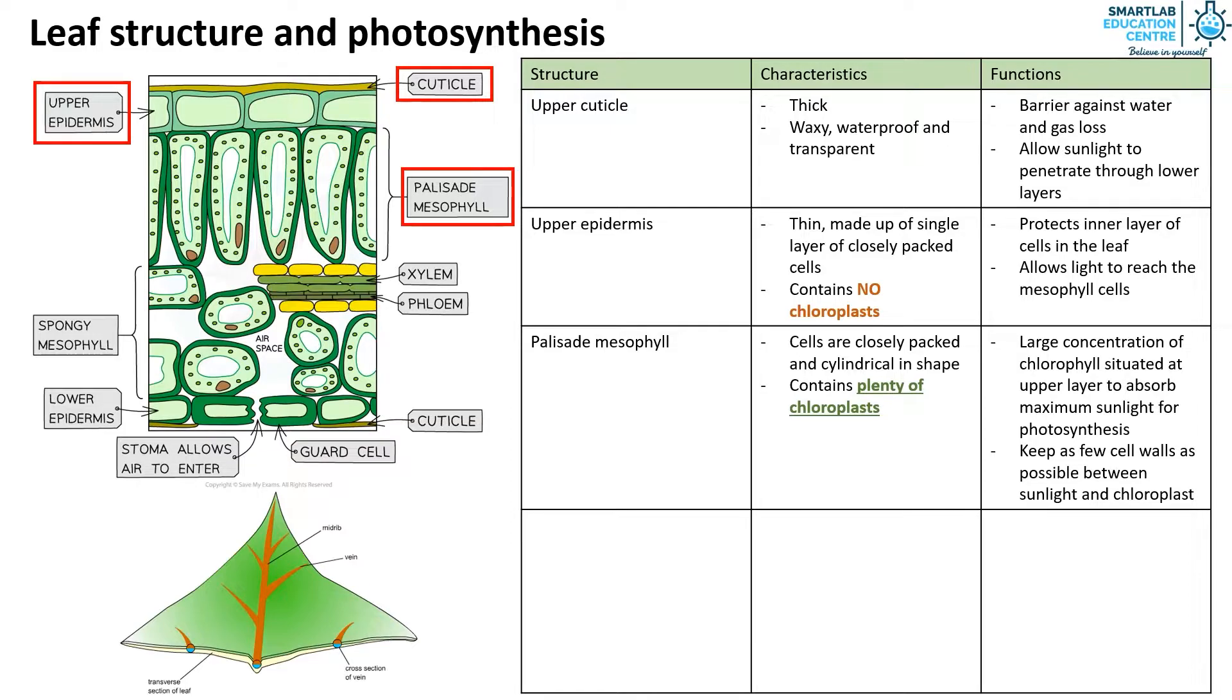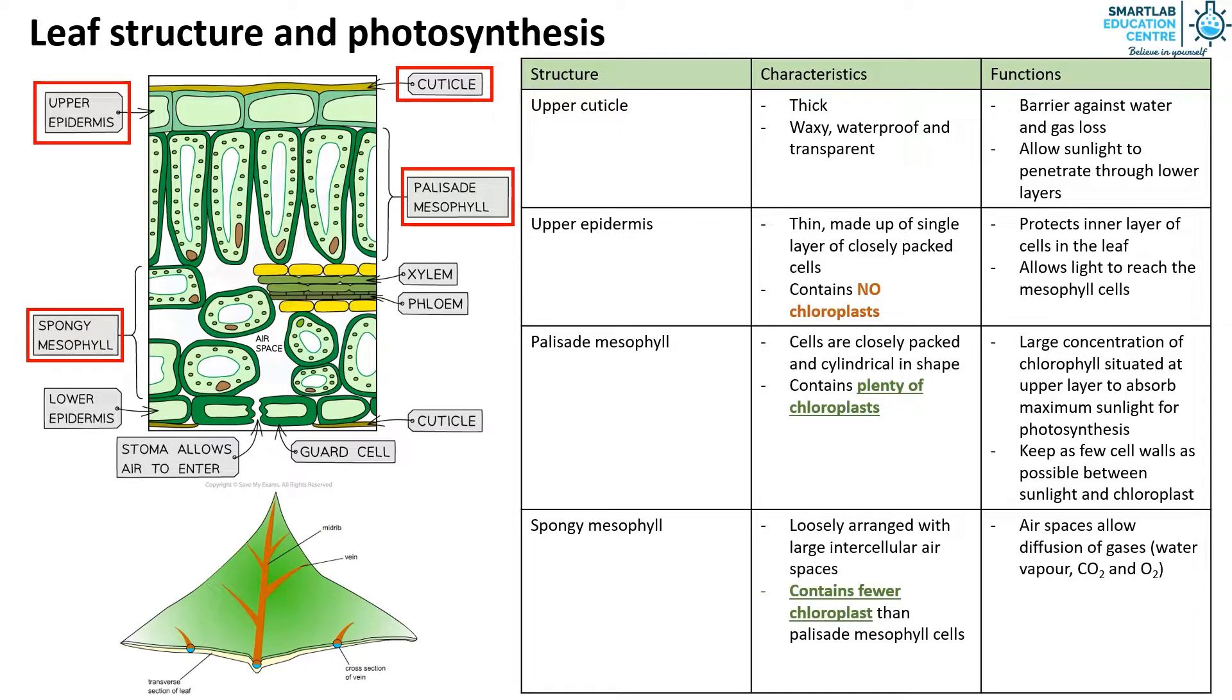The spongy mesophyll contains cells that are loosely arranged with large intercellular airspaces. The cells contain fewer chloroplasts than the palisade mesophyll cells. The intercellular airspace allows for diffusion of gases such as water vapor, carbon dioxide and oxygen. These cells are able to carry out photosynthesis to absorb any sunlight that escaped the palisade layer.